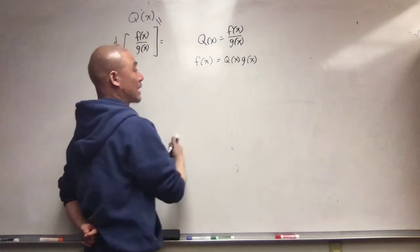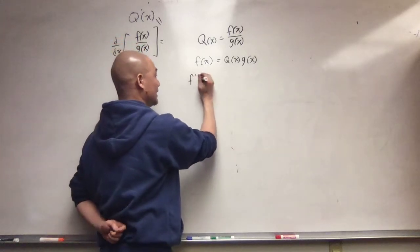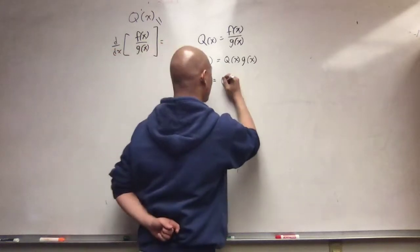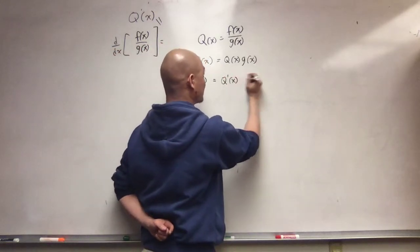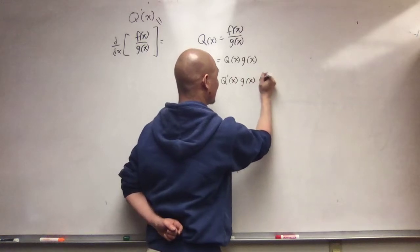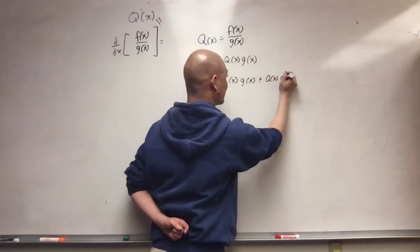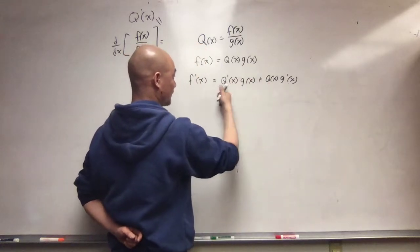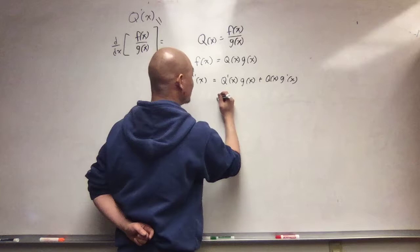Well, if f is q times g of x, then f prime of x is, by the product rule, q prime of x, g of x, plus q of x, g prime of x. And so, what we get is this expression here.